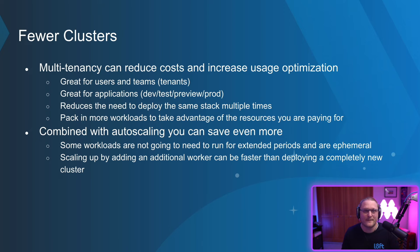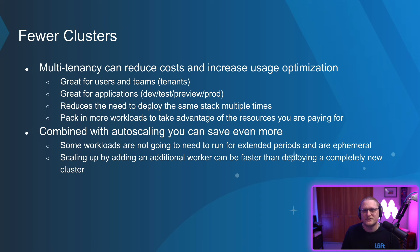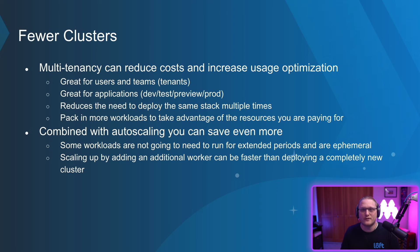Sometimes you'll have multiple clusters if you want to separate things completely for fewer points of failure, but think about this when you're trying to save costs, especially if you only have a small application serving limited traffic. You can also combine multi-tenancy with auto scaling to save even more. Some workloads are ephemeral and don't need to run for extended periods — scaling up by adding additional workers is much faster than deploying a completely new cluster. You can set a buffer zone so that when you're getting close to capacity, it scales up another worker node and places new workloads there. And if you're using a spot instance, you can save even more — just spin it up cheap, run those workloads quickly, and delete it.